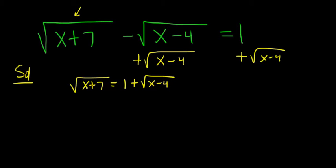Okay, now we have to get rid of the square roots. So we'll square both sides. We'll square this side and square this side. When you square this side, the square root goes away, so you just get x plus 7.